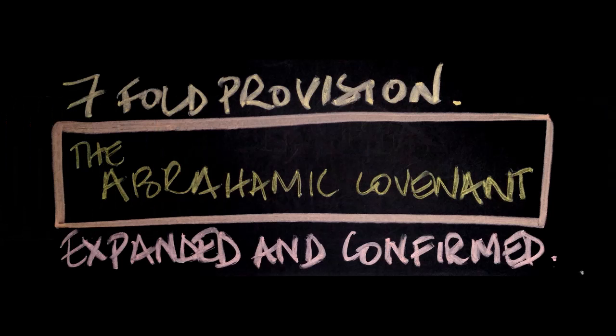In verse 2, God says: one — 'I will make of thee a great nation'; two — 'I will bless thee'; three — 'I will make thy name great'; four — 'thou shalt be a blessing'; five — 'I will bless them that bless thee'; six — 'curse them that curse thee'; and seven — 'in thee shall all families of the earth be blessed.' So there's that sevenfold provision laid out in the Abrahamic Covenant.